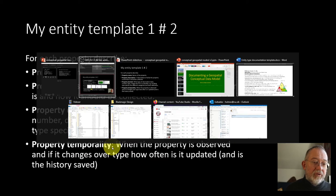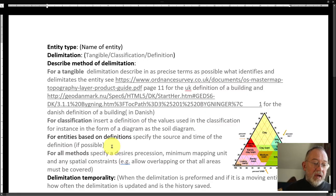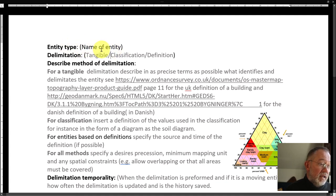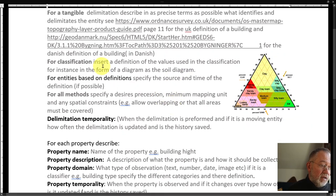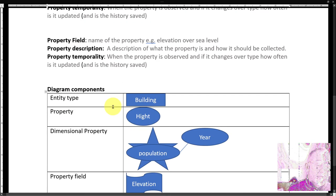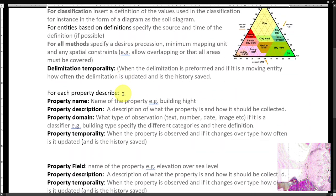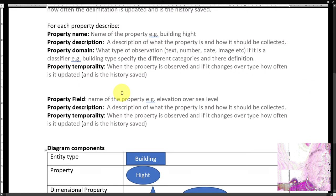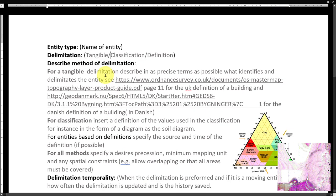Let me take a look at my Word document, which I use for this. I have these fields: entity type, how it's delimited, the description of the limits, some links to common examples from Ordnance Survey and from the Danish dataset, whether it's classified, and so on. I basically just fill out this form. What I really often do is start by scribbling a diagram and then fill in the text elements — I very often do both.